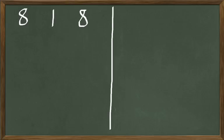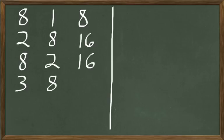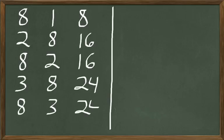Let me divide our board a little bit. The next one is 2 times 8 are 16. And then we switch the 8 and the 2 and we have 8 times 2, that's also 16. And then 3 times 8 — you know what that is? 24. And then 8 times 3, that's going to be 24.